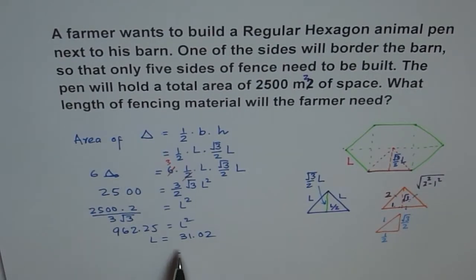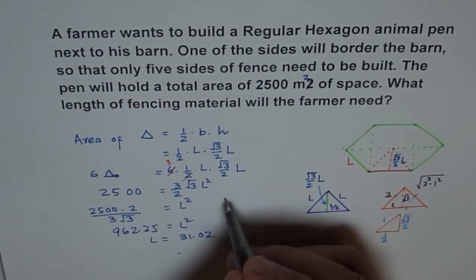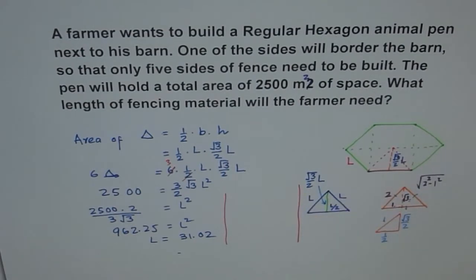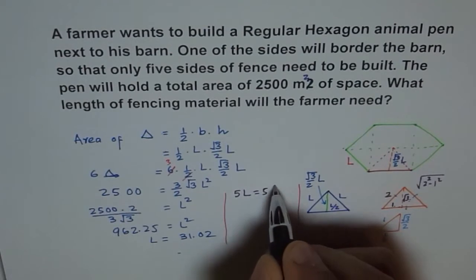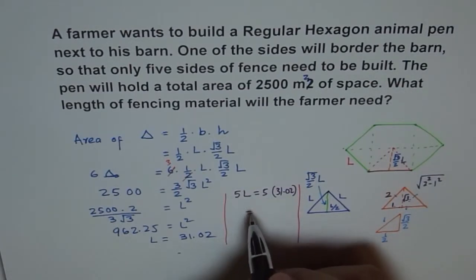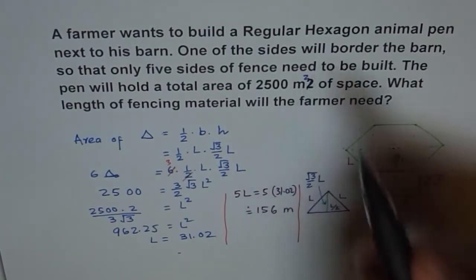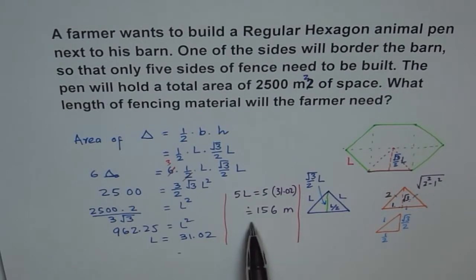So we get the length of one side as approximately 31.02 meters — you can check: 30 squared is 900, so it is slightly more than 30. Now we need the total fencing. Since one side borders the barn, we only need 5 sides. So 5 times 31.02 gives us 155.1. Since it is more than 155, we round up to 156 meters. The farmer will need 156 meters of fencing material.